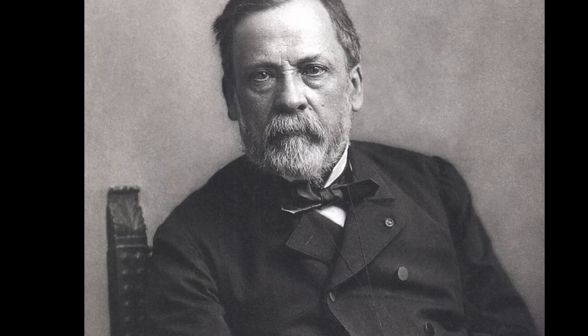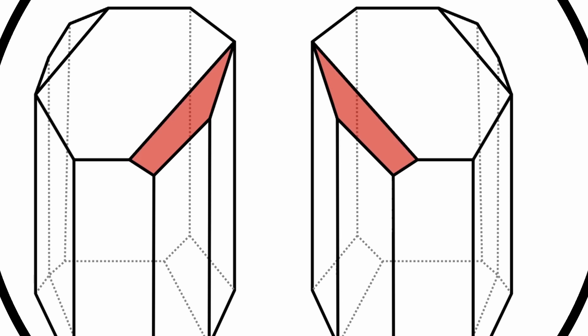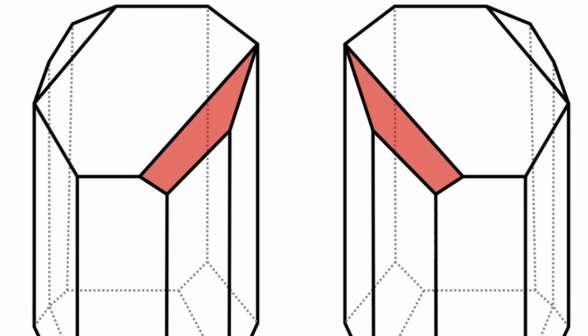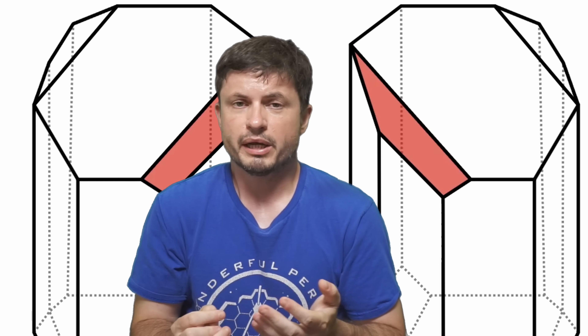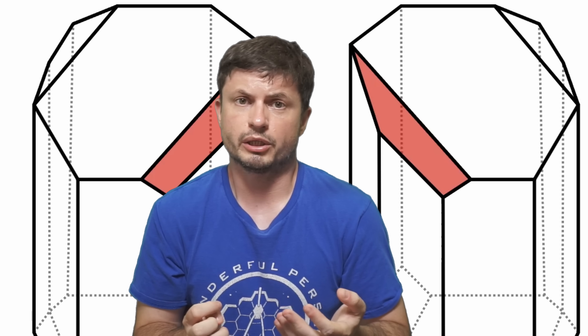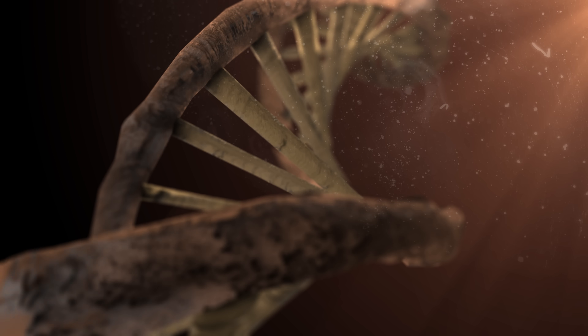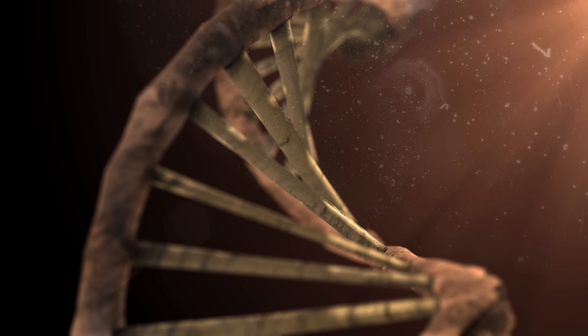Intriguingly, this unusual concept has been known for a very long time. It was originally discovered by the famous Louis Pasteur, who found this phenomenon in the mid-19th century by studying various crystals. Back then, he even proposed the possibility of some kind of mirror life, where essentially all of the proteins and sugars would be completely reflected. Nothing like this has ever been discovered, but hypothetically it could exist somewhere on some other world.